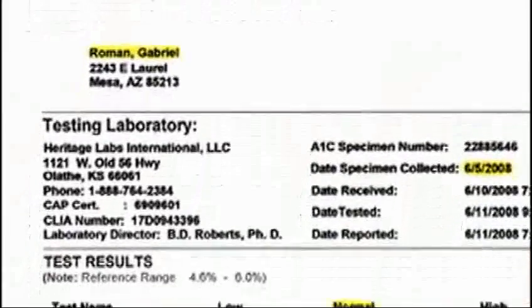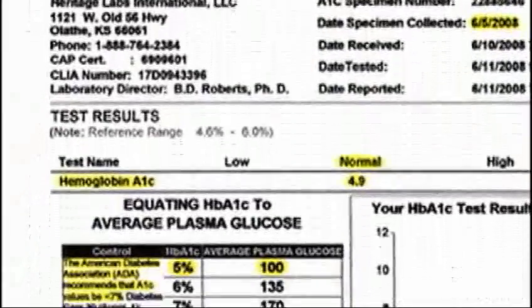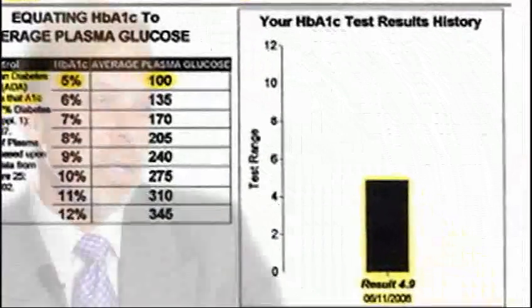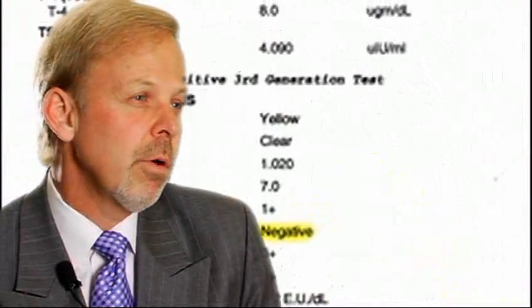And it was amazing what happened. It was immediate. Gabriel's blood sugar started to normalize, and the rest is history. Gabriel is no longer a type 1 diabetic.